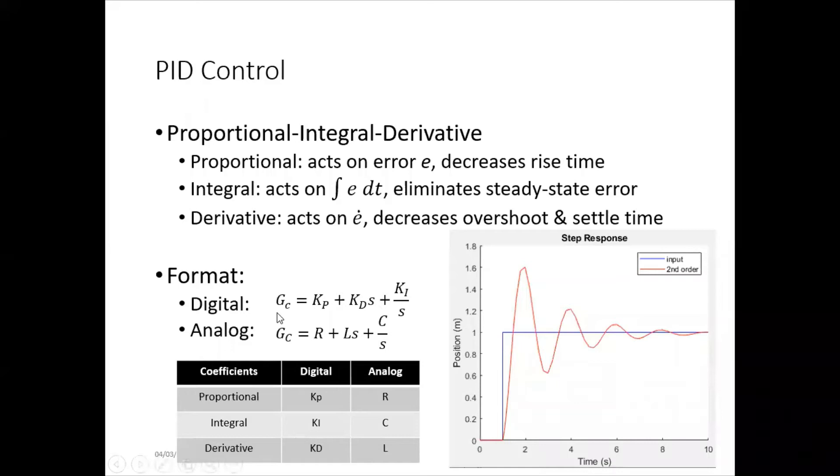You can implement this digitally in code using sort of this way for your controller or analog in your circuit by actually putting in values for resistor, inductor, and capacitor. Probably most of y'all will be using digital because it's a lot easier and you can tweak these constants so that you can see how your system behaves so you get to the right value.